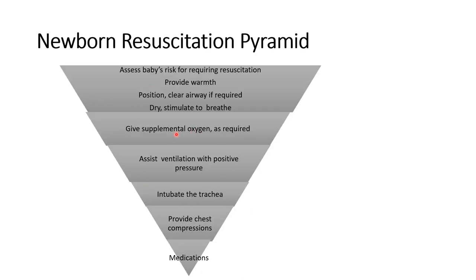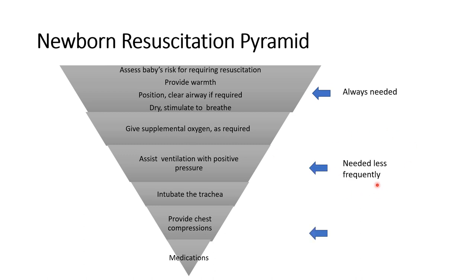This pyramid shows the steps of resuscitation: ABCD. In step A, the initial steps of resuscitation include keeping the baby warm, clearing the airway, positioning the baby, drying, and stimulating. These steps are almost always needed. In step B, we provide oxygen if required, then bag and mask ventilation and intubation — these steps are needed less frequently. Then steps C and D: chest compressions and drugs or medication are really rarely needed.